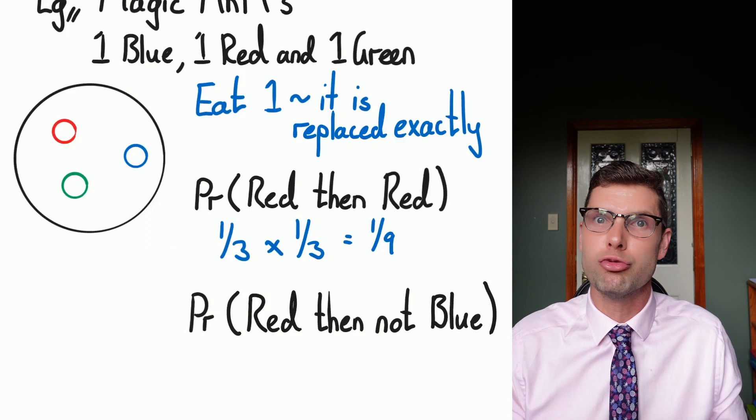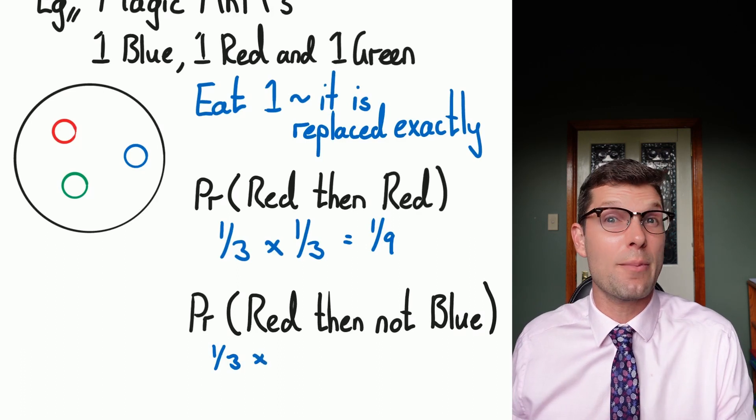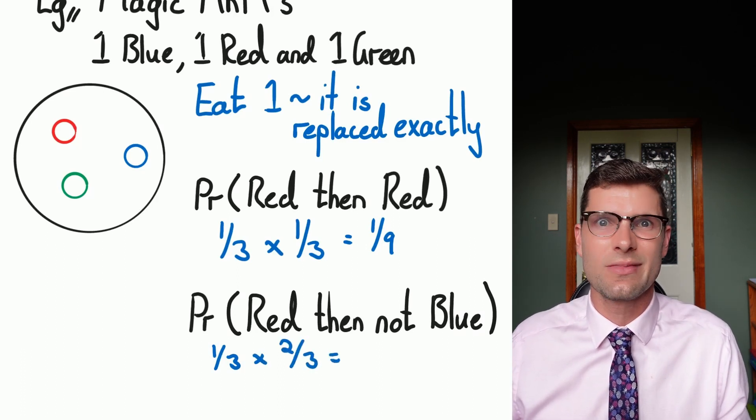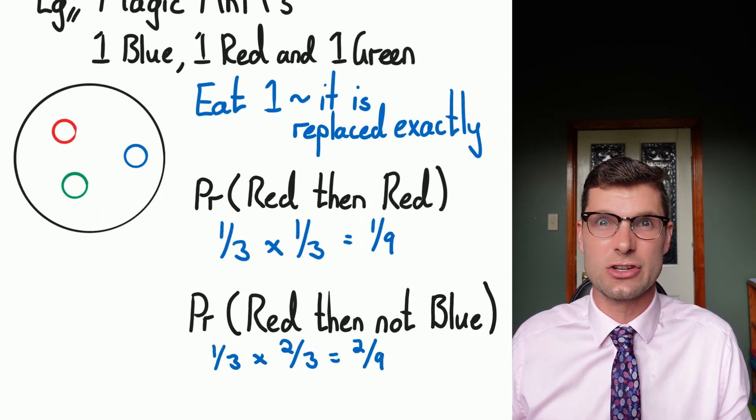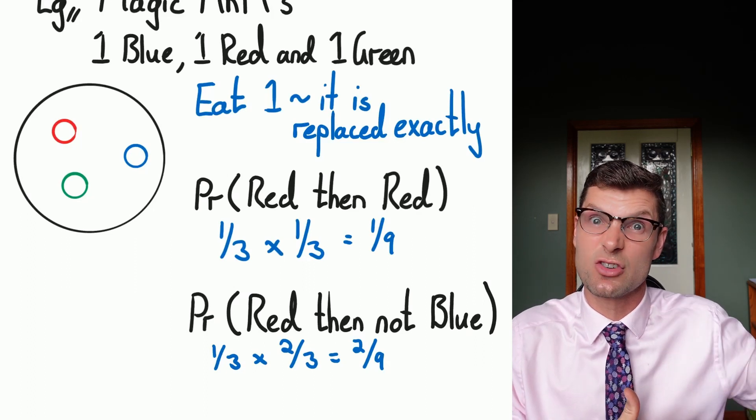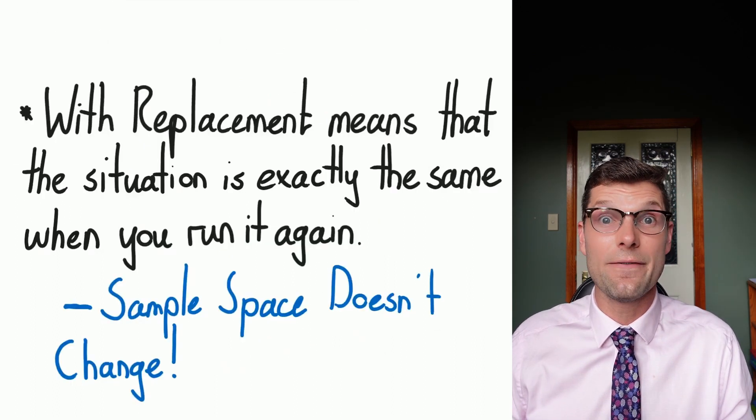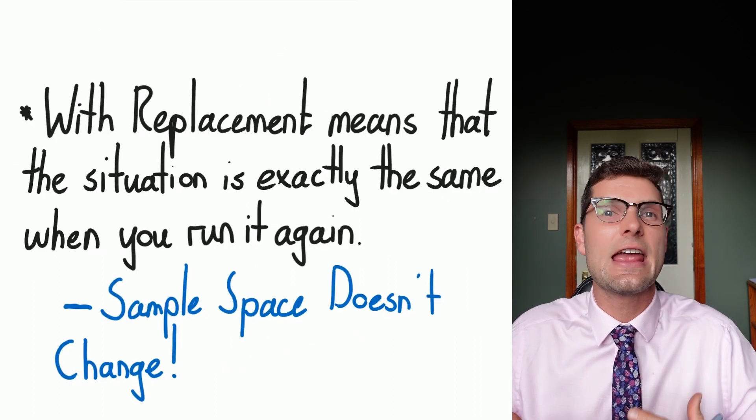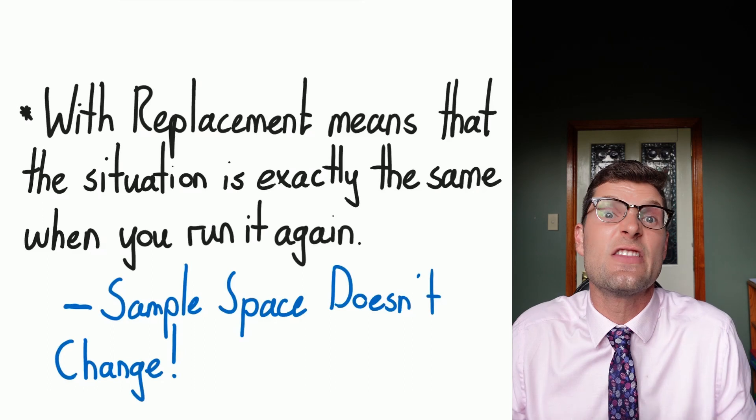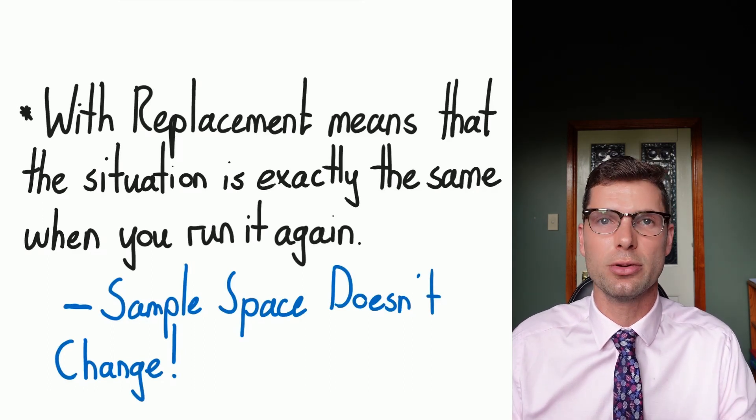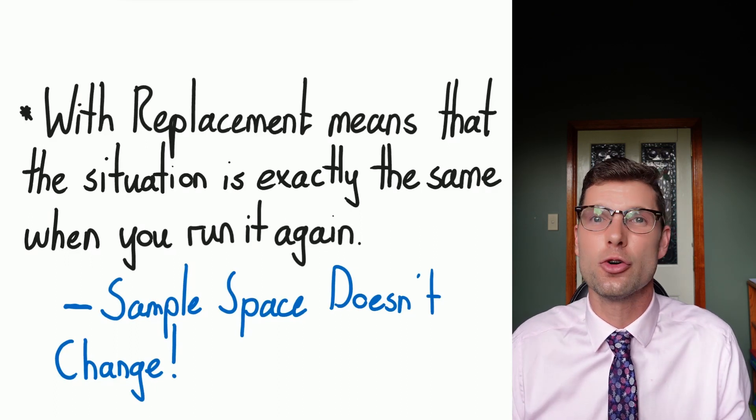Another example could be a red and then not a blue. So I'd have a third again, one over three is my red chance, multiplied by two over three for the not blue. And that just equals two over nine. So these questions are really easy. They're kind of your baseline questions for this. You're just doing the first experiment twice, three times, four times, all the way down. Nothing really changes. If you run the same game or experiment again and again, the sample space does not change. The situation does not change because it's been replaced.